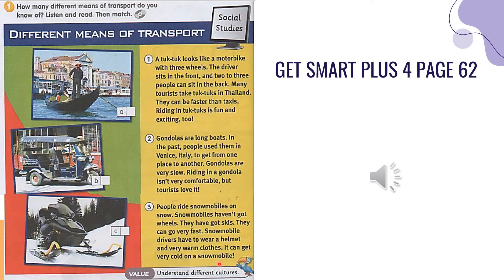Let's take a look at this reading text. We have three different types of transportation — 'transportation' is 'kenderaan'. From the first paragraph, it is talking about a tuk-tuk. A tuk-tuk looks like a motorbike with three wheels. We have pictures a, b, and c — which one is a tuk-tuk? Picture b has one, two, three wheels, so b is the tuk-tuk.